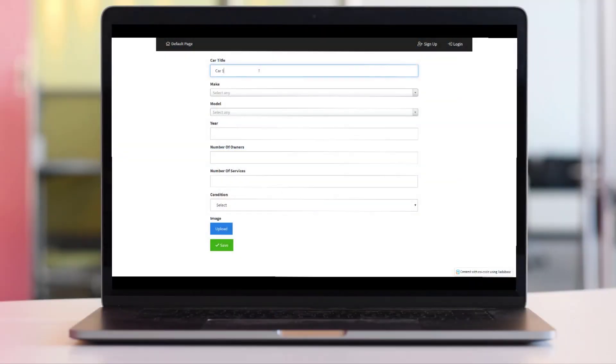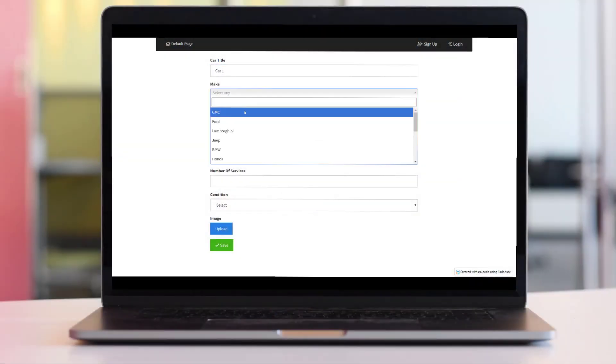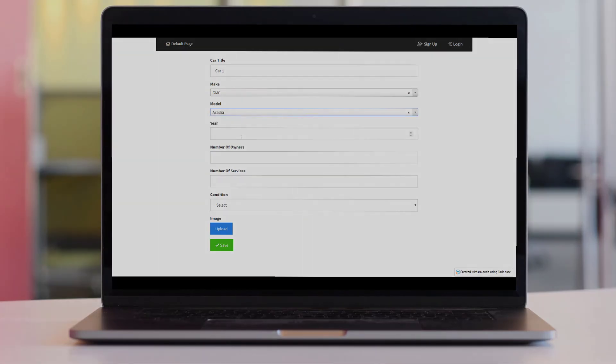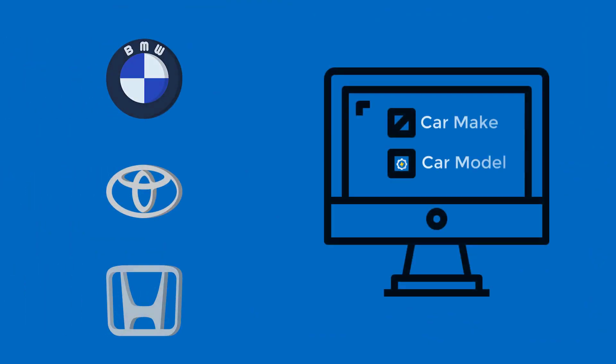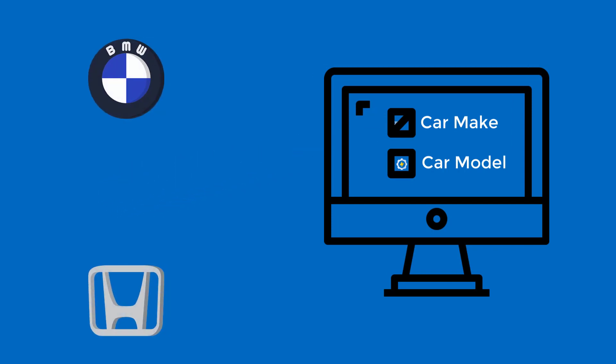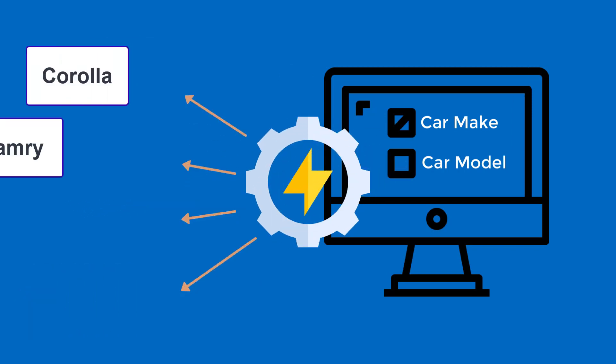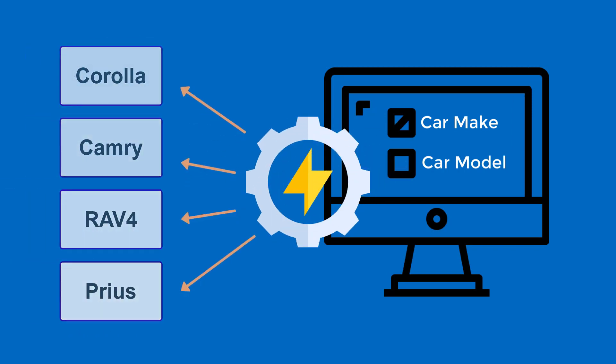In this video, we will go over how to set up dependent drop downs in a form. For our example, we will use car makes and models. Whenever we are selecting a car model in a form, we want to only display models connected to the selected car make.